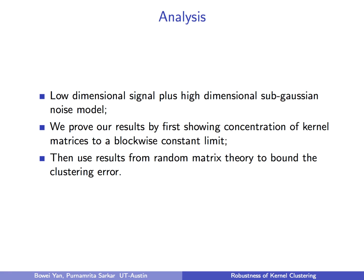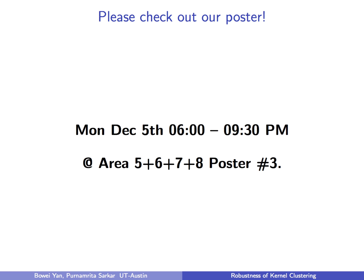Our proof technique is built on the assumption that the data is generated from a low-dimensional signal plus high-dimensional sub-Gaussian noise model. In the analysis, we first show the concentration of the kernel matrices to a block-wise constant limit, then use results from random matrix theory to bound the clustering error.